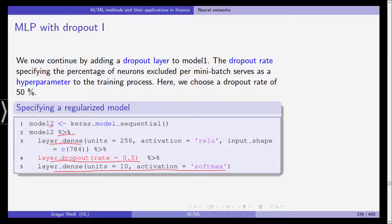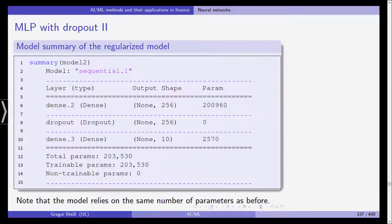So we have three layers now and this is the summary of our regularized model. Again it's sequential, we have those three layers. The dropout layer doesn't have any parameters so again we get the same number of parameters as before. So it's not really about reducing the flexibility of the model, just using maybe different data to fit the model.